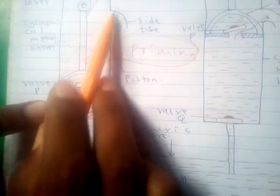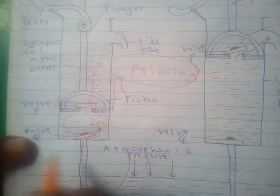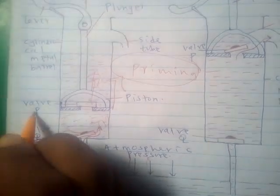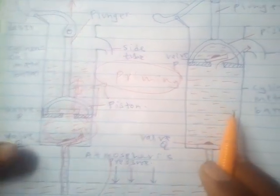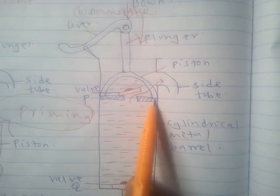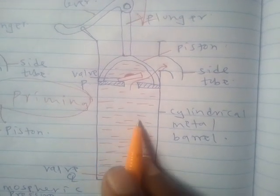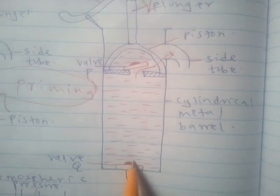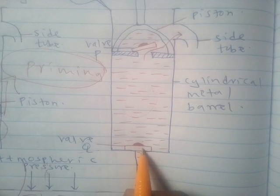The process of moving the plunger up and down continues until water fills the space between valve Q and valve P. During the downstroke, the plunger is moved down. Because of the weight of the water above valve Q and the weight of valve Q itself, valve Q closes.